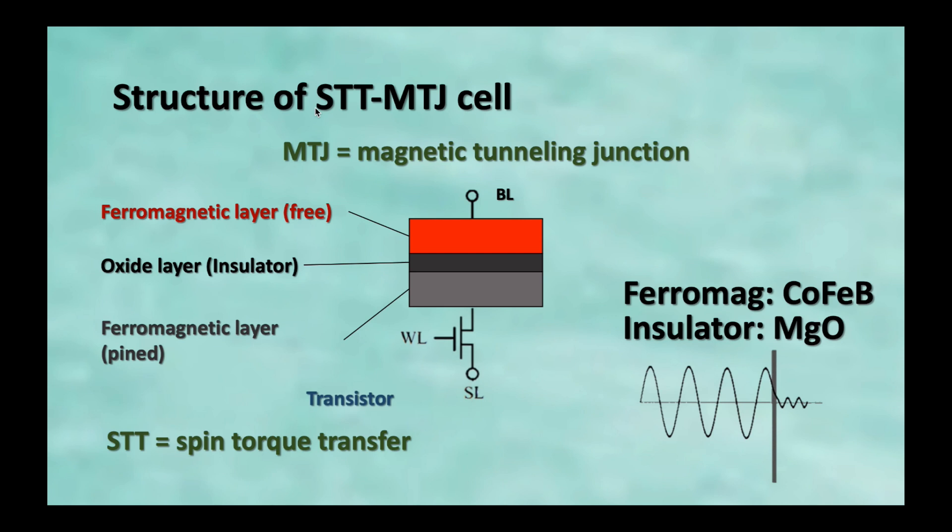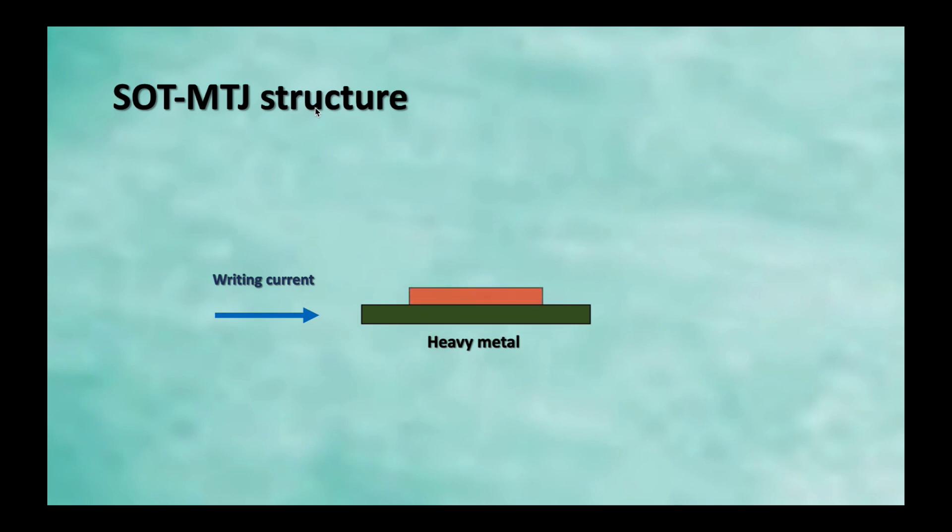What is MTJ? MTJ is the abbreviation for magnetic tunnel junction. It consists of two ferromagnetic layers such as cobalt iron boron crystal at the top and bottom, and an insulator such as magnesium oxide in the middle, which acts as a tunneling barrier. STT is an abbreviation for spin torque transfer. It is an important writing mechanism for MRAM application. We will have an introduction to it later.